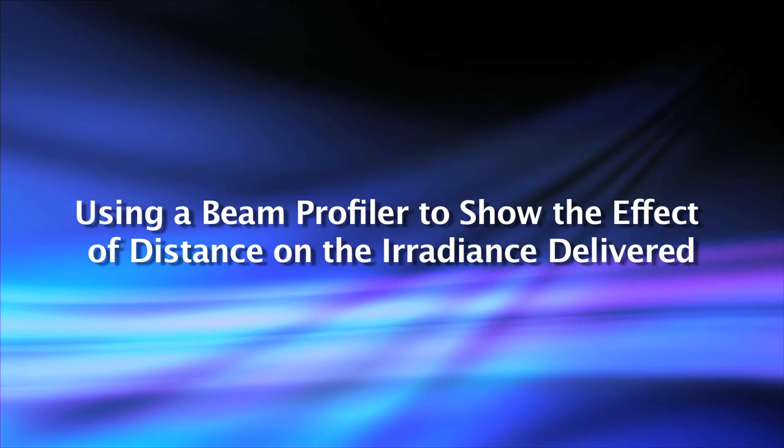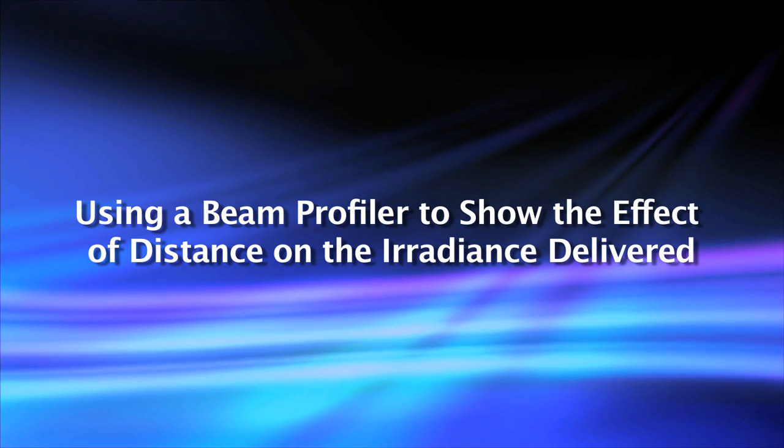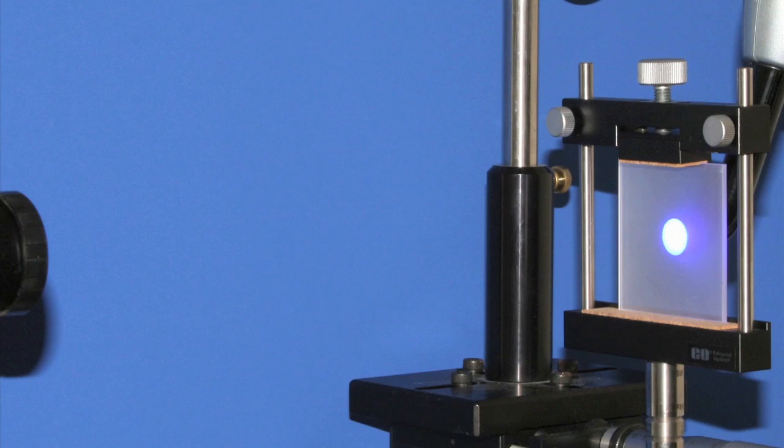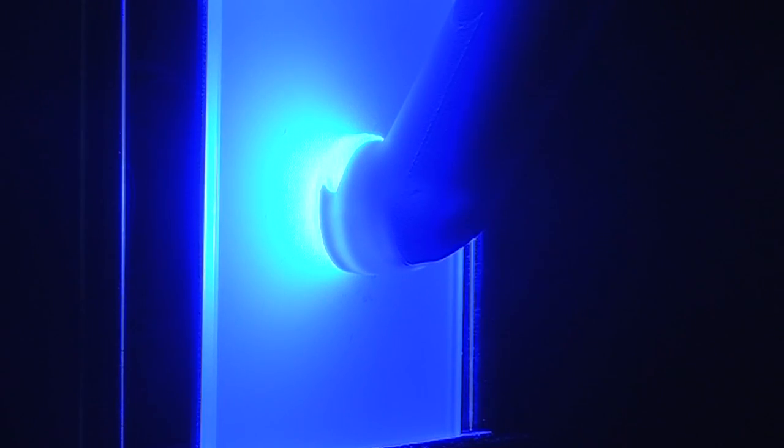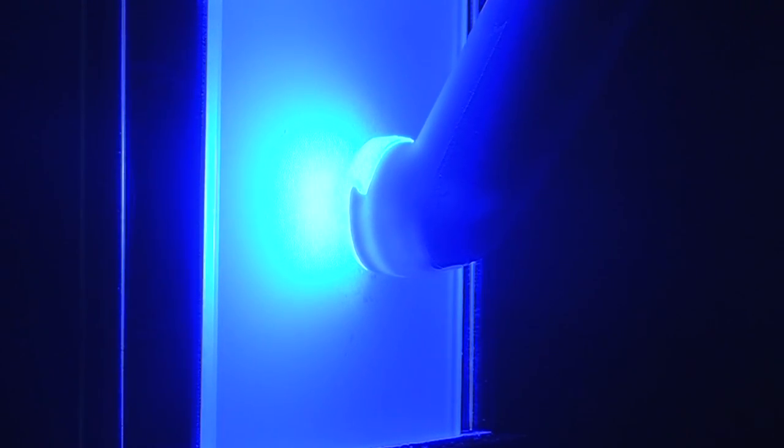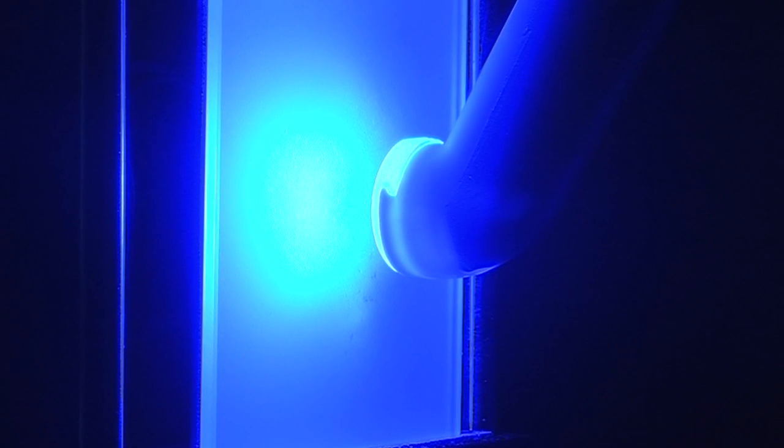The article goes on to describe how a Spiricon beam profiler was used to show how the distance from the end of the curing light affects the beam profile. Here we can see a curing light held up against the target screen of the beam profiler. You can see how the image changes as the distance increases from 0 to 4 mm, and then from 4 to 8 mm.